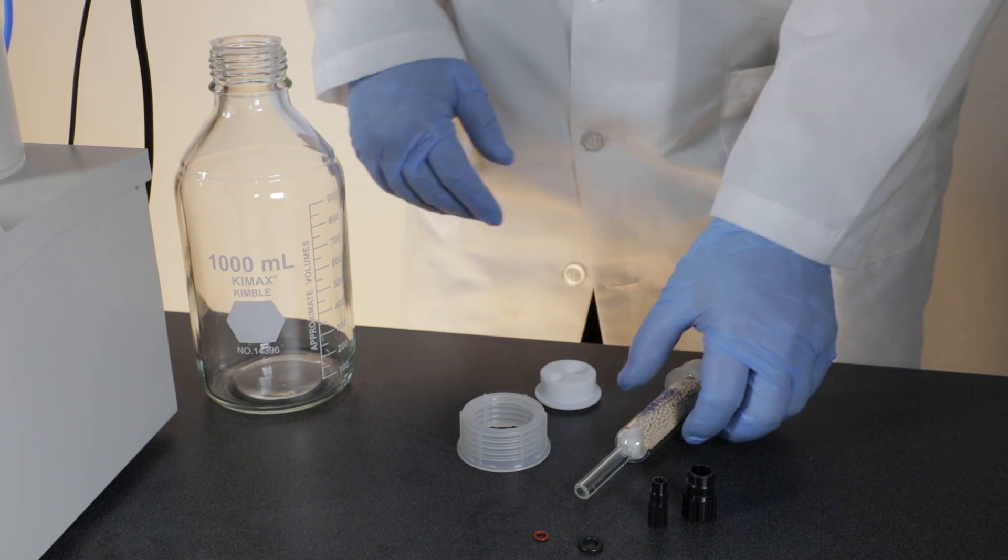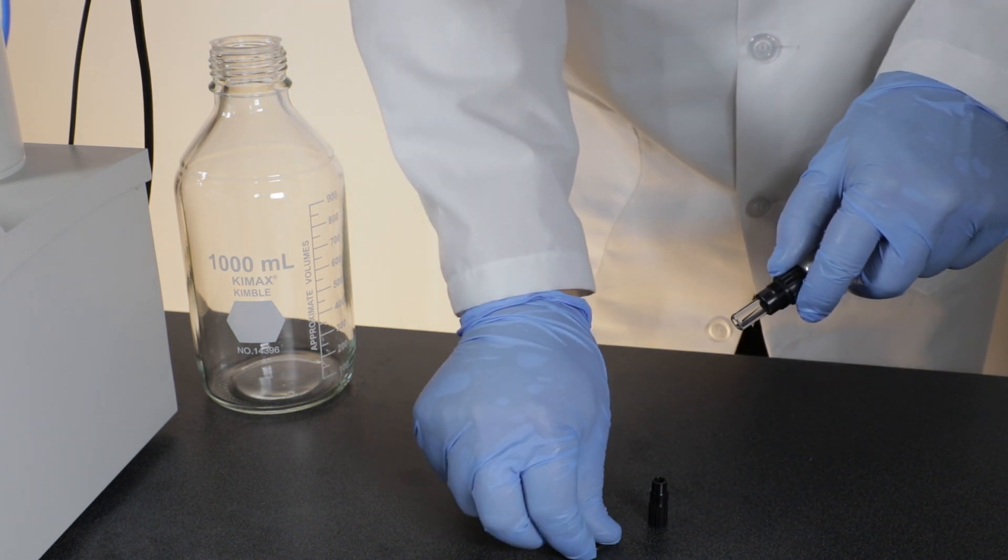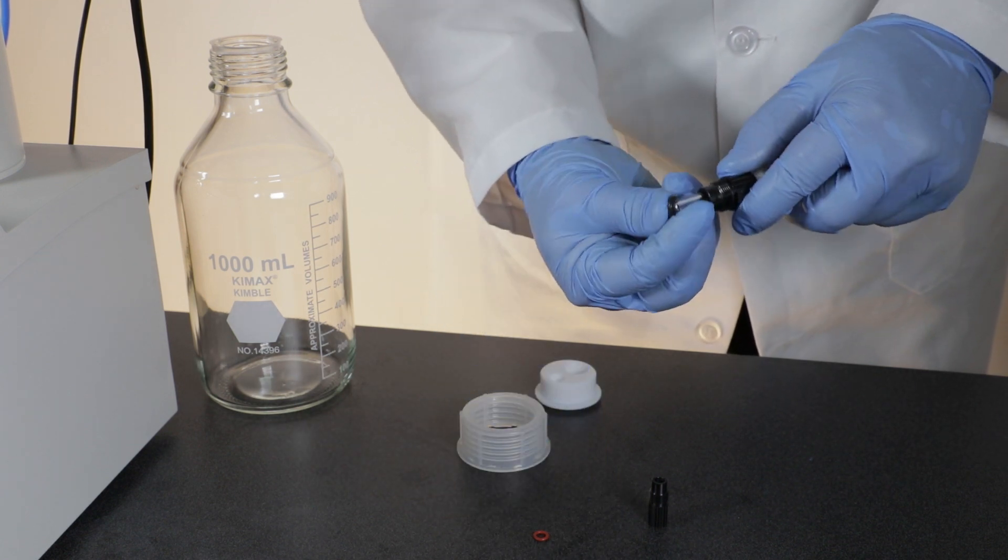Remove the 10mm and 5mm fittings and O-rings from the bottle top. Start with a desiccant cartridge. Insert it through the 10mm fitting and black O-ring and tighten it onto the bottle top.